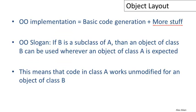The important thing to know about objects — the slogan that you hear when people talk about object-oriented programming — is this: if B is a subclass of A, then an object of class B can be used wherever an object of class A is expected. So there's a substitutability property. If I have a piece of code that can work on A's, then it can also work on B's and any other subclass of A.